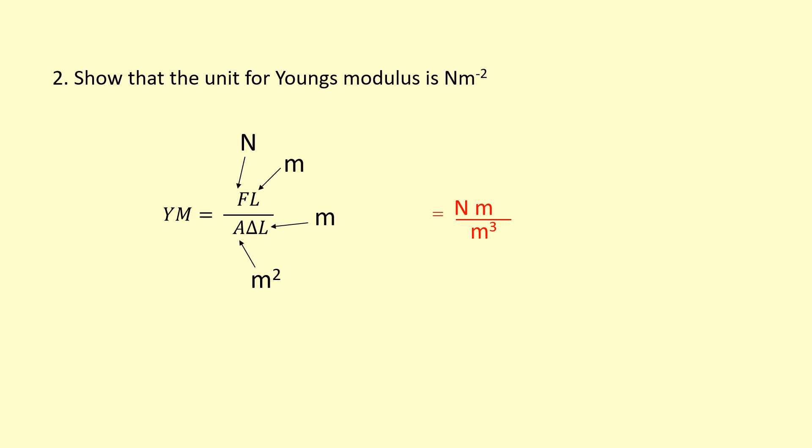I'm going to bring the meters cubed at the bottom to the top, so because there's meters to the power of 3, it becomes meters to the power of minus 3 when it comes to the top. The newton meter there, the meter is just to the power of 1. I'm writing the 1 in now so you can visualize what's going on.